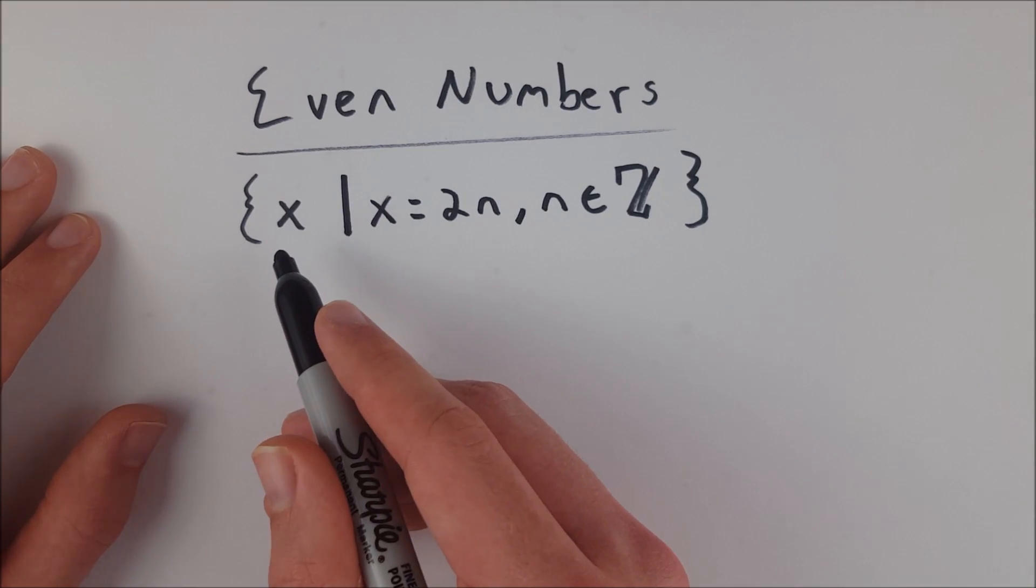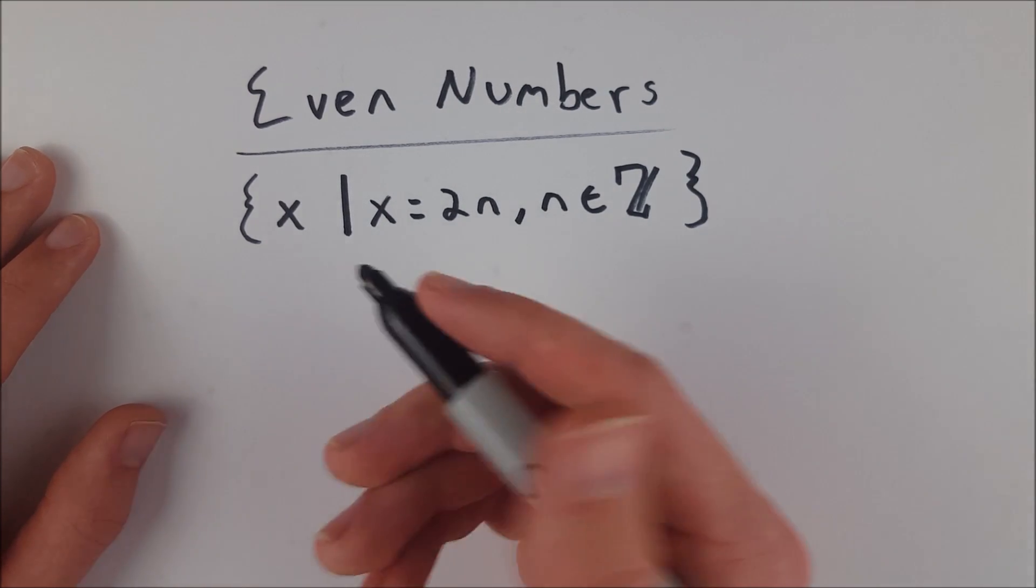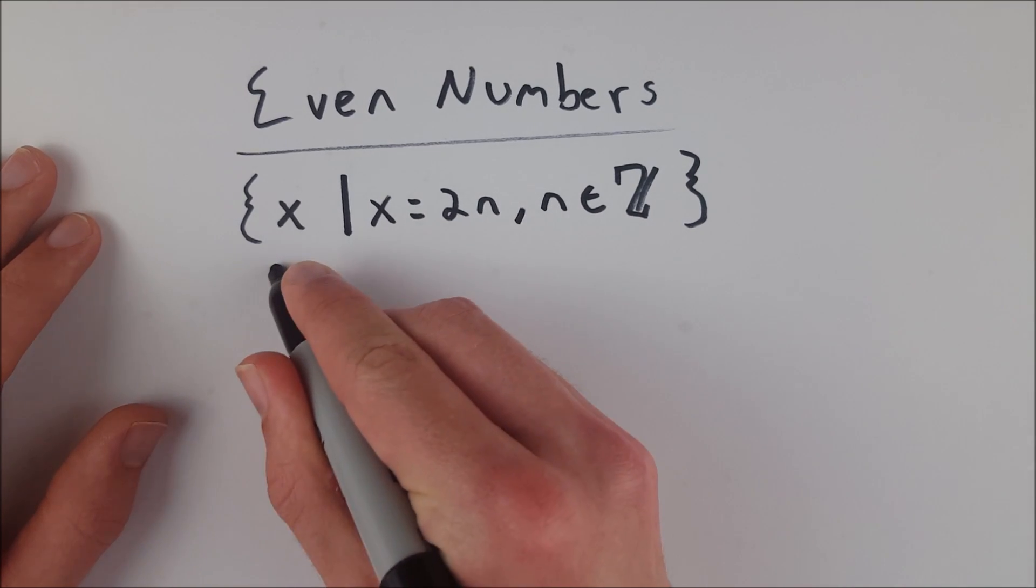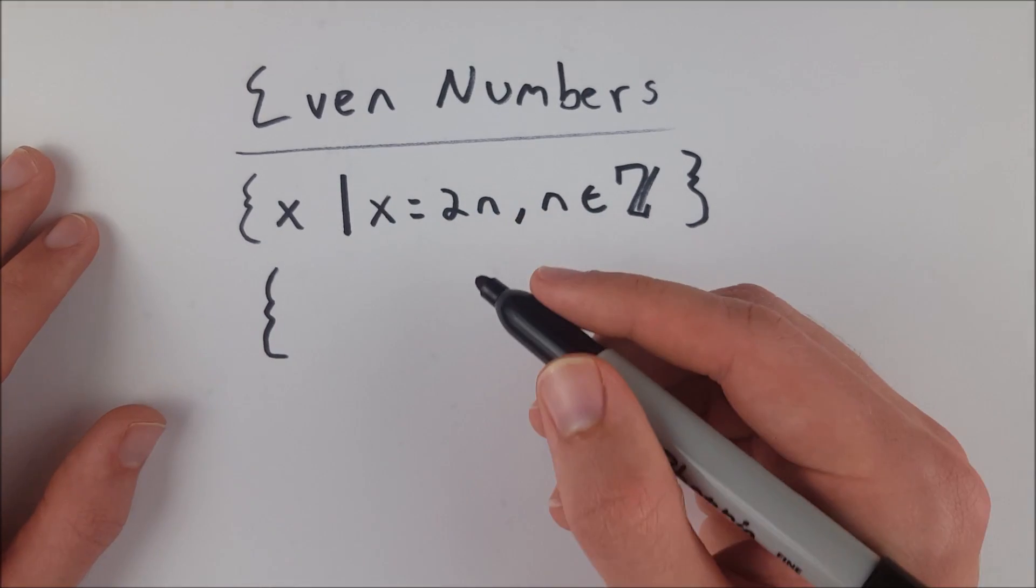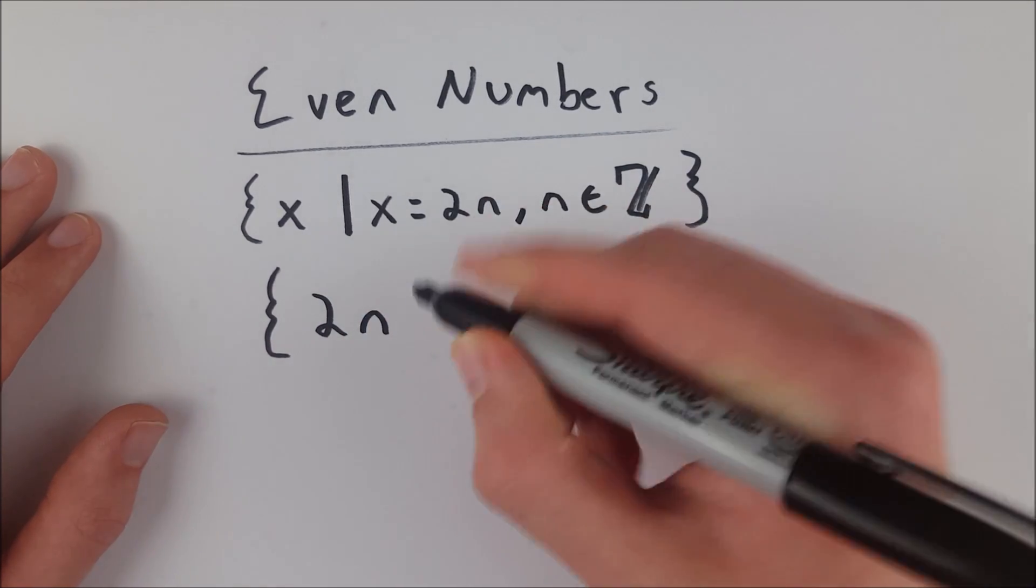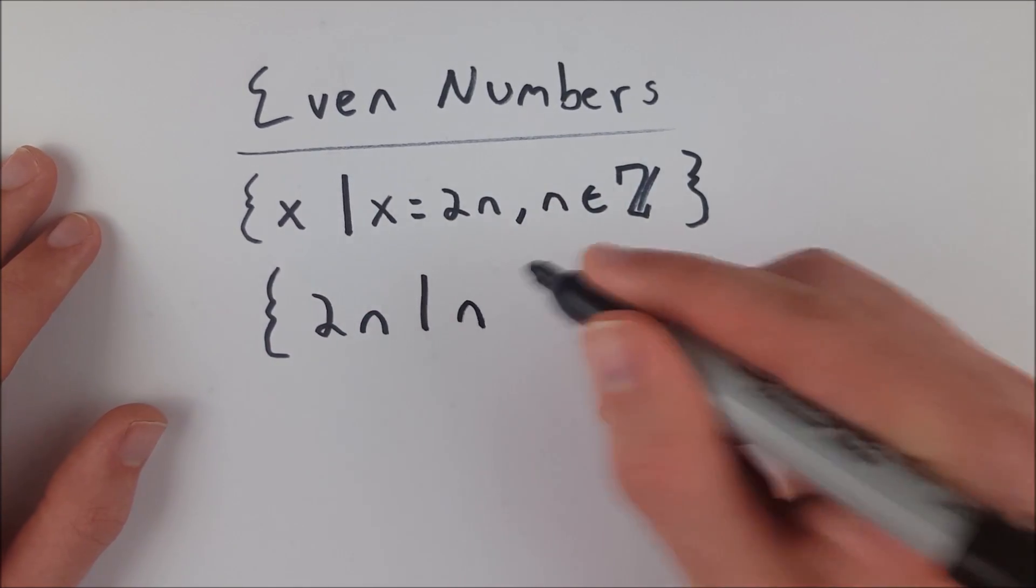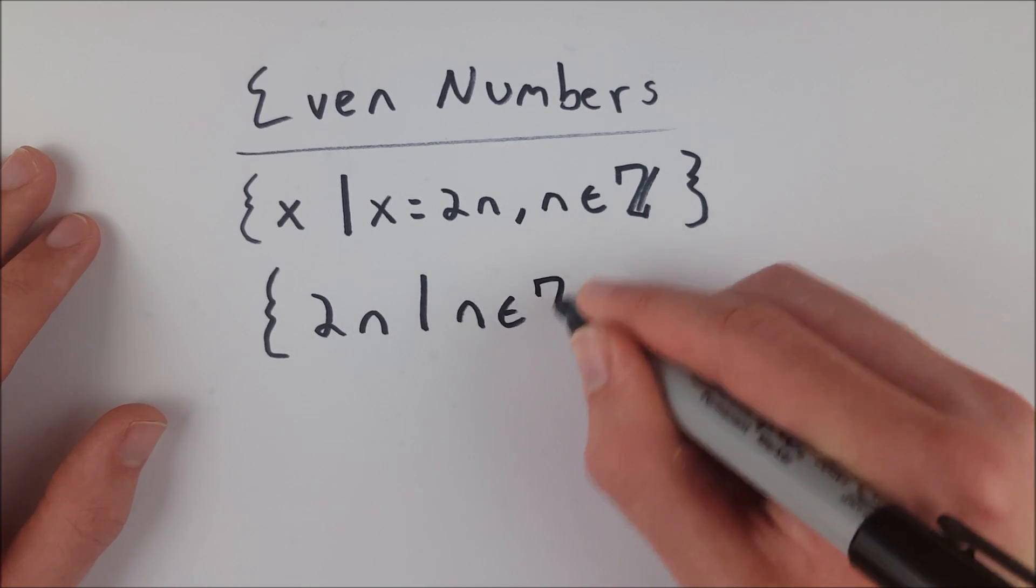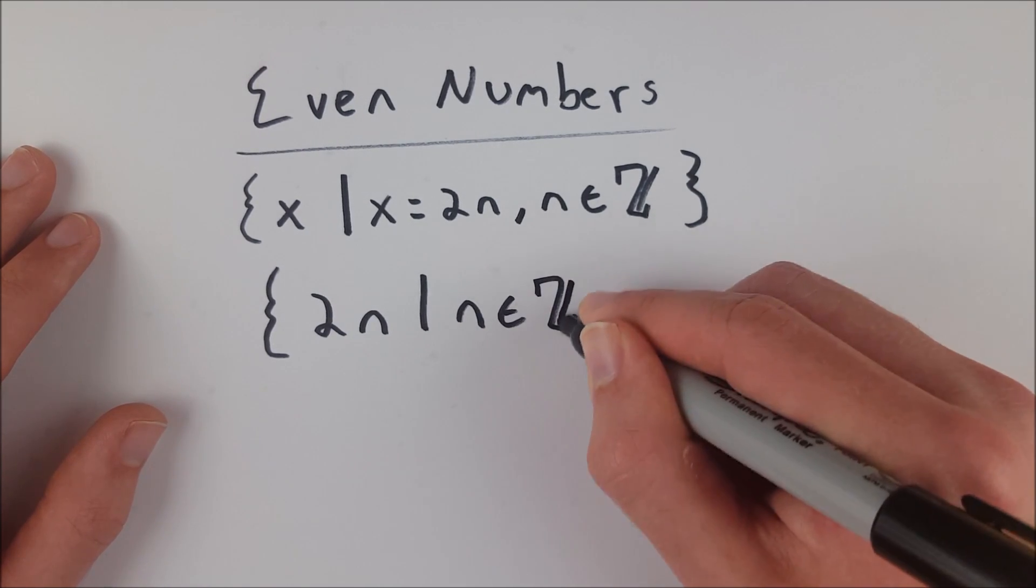Now, instead of just putting a variable here, you could also use slightly more complicated expressions. The way I would prefer to write the even numbers in set builder notation would just be 2n, such that n is an element of the integers.